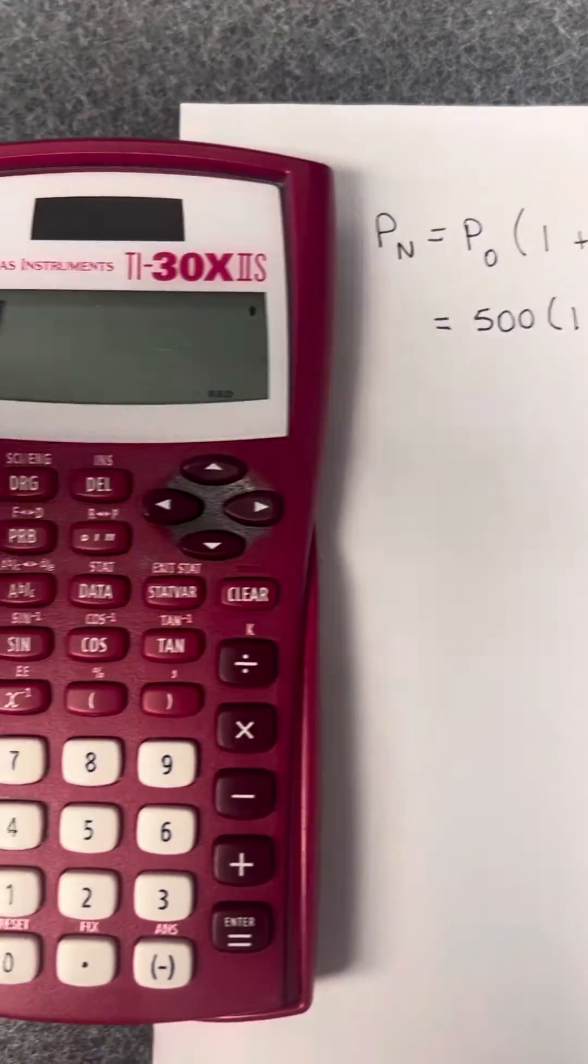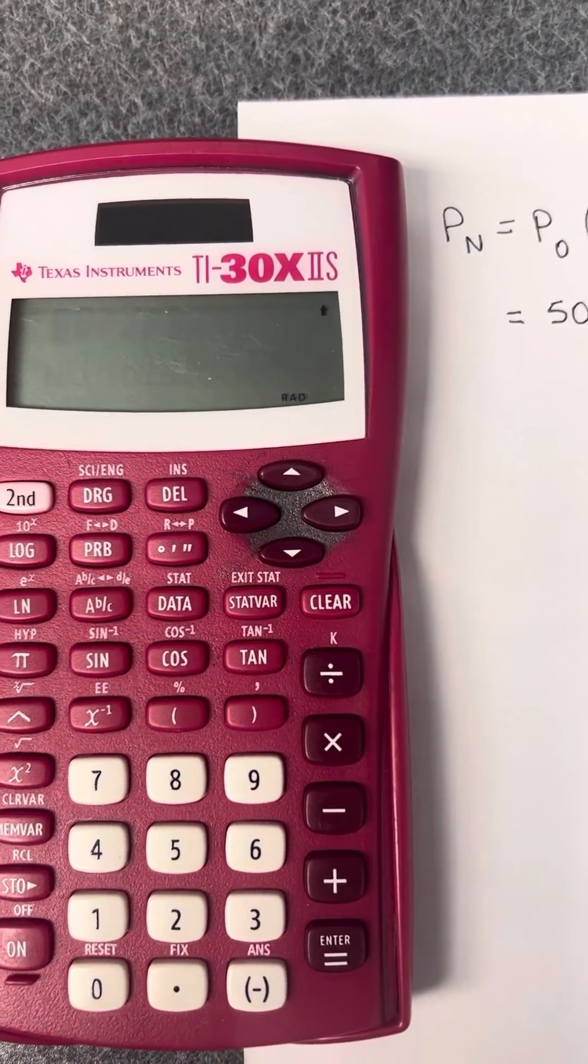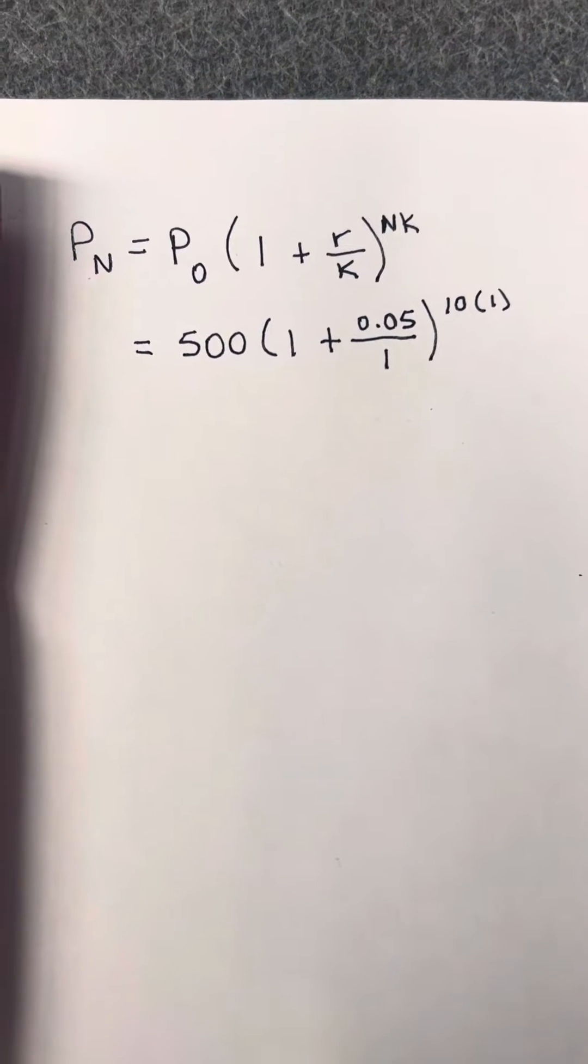I'm going to show you how to put the compound interest formula into the TI-30XIIS calculator. Here I have an example of a compound interest formula where our principal amount that we begin with is 500